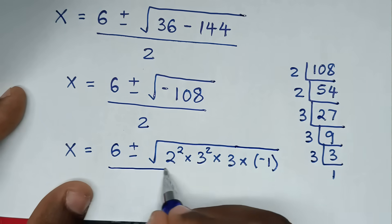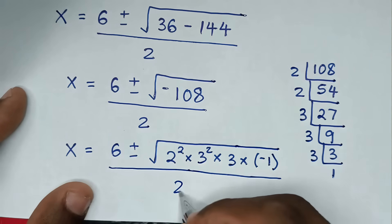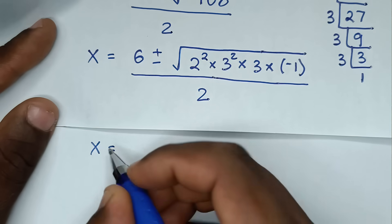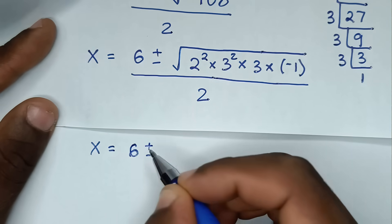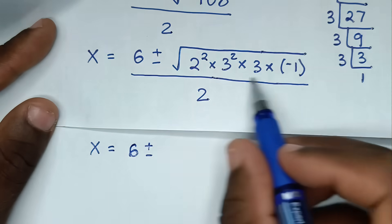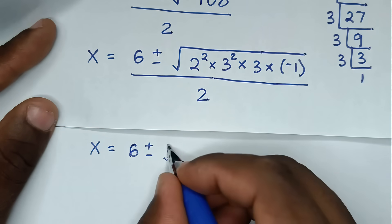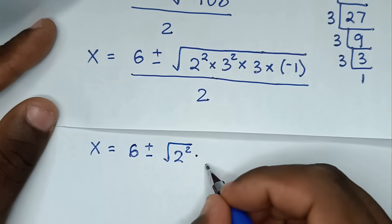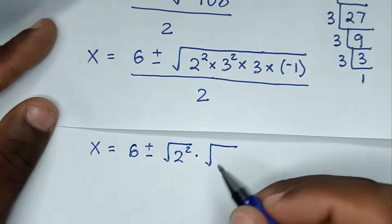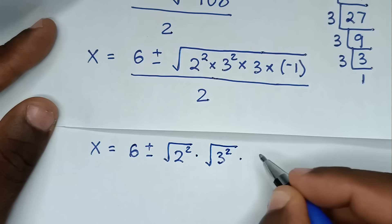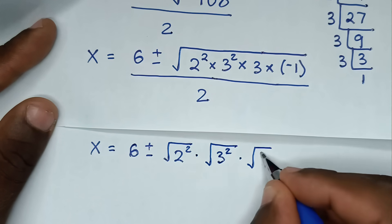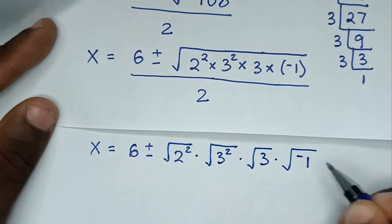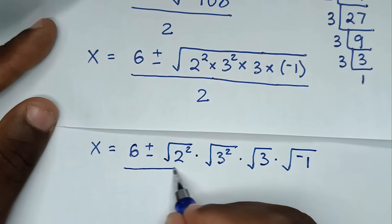All over 2. In the next step, x is equal to 6 plus or minus: we separate the square root as square root of 2 squared, times square root of 3 squared, times square root of 3, times square root of negative 1, all over 2.